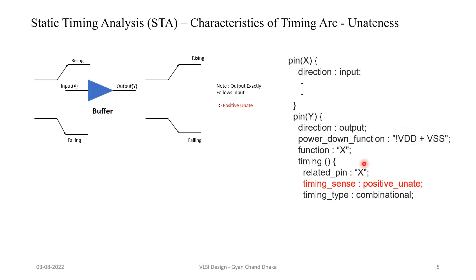The unateness characteristic of this timing arc is positive unate. Now let's see how unateness is defined in the timing library. This is a snippet of the buffer timing library. If you see here, we have pin A as the input pin and pin Y as the output pin. In the timing category, the timing sense of this path — the A to Y path — shows that the related pin is A. So this timing arc is between input A and output Y, and the unateness characteristic is positive unate.